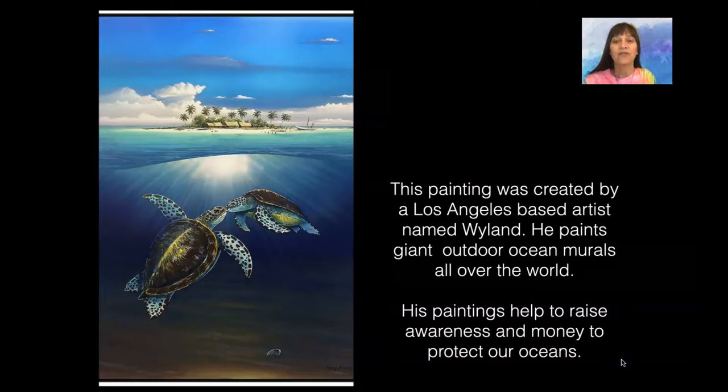This painting was created by a Los Angeles-based artist named Weiland. He paints giant outdoor ocean murals all over the world. His paintings help to raise awareness and money to protect our oceans. Do you notice how in this painting, part of the painting is down under the ocean, and the other part is up above at the beach? How did this artist do that?